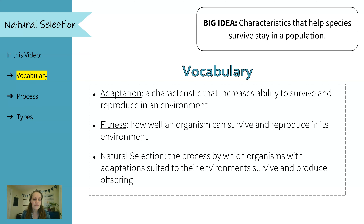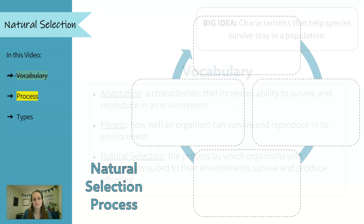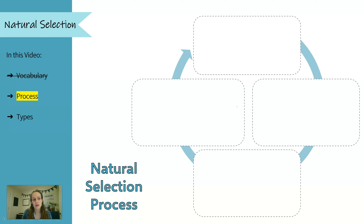And finally we have natural selection, which is the process by which organisms with adaptations that are suited to their environments survive and produce offspring. We're going to look at this process in a bit more detail. I like to break natural selection down into four steps.